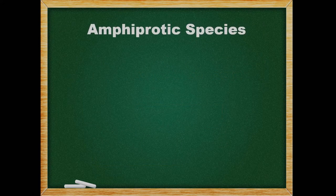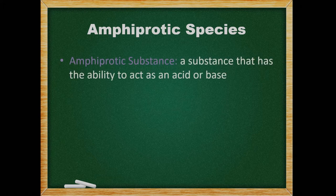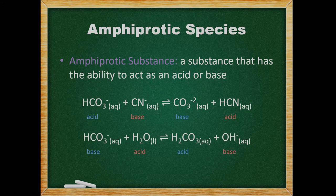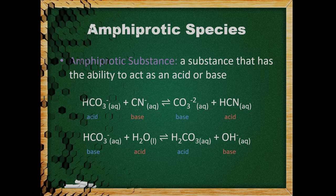A substance that has the ability to act as an acid or base is called an amphiprotic substance. Water is a common amphiprotic substance along with many anions. For instance, bicarbonate can act as an acid or a base. These substances must have a proton to donate and be able to accept a proton. Besides water, uncharged species are generally not amphiprotic, although ammonia is one exception.